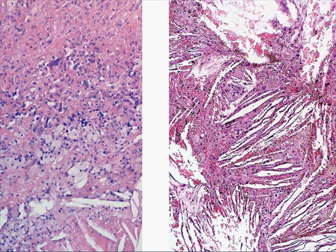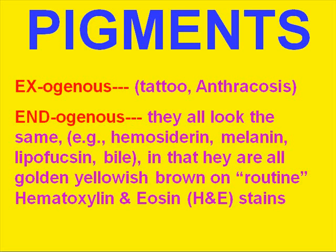Pigments can be exogenous, such as tattoos or anthracosis, or they can be endogenous to an area. The four classical endogenous pigments are hemosiderin, melanin, lipofuscin, and bile. Remember those — they all look the same: golden brown and refractile. There are always a variety of stains you can use to differentiate them.